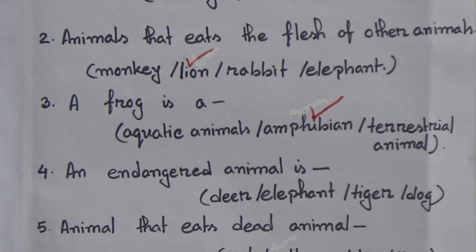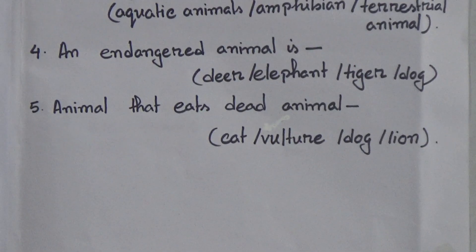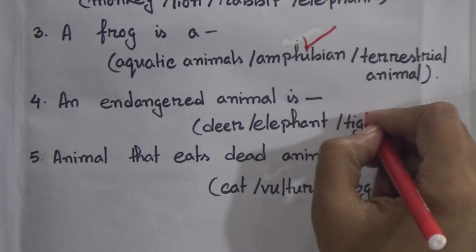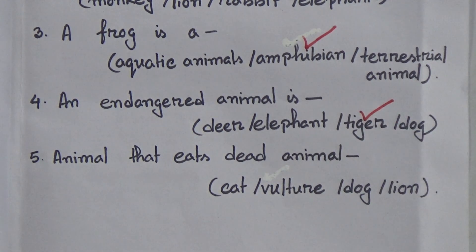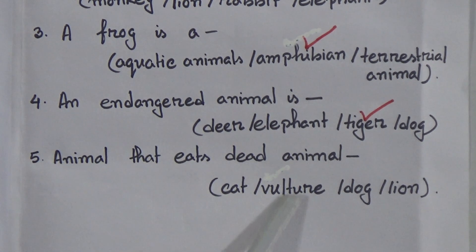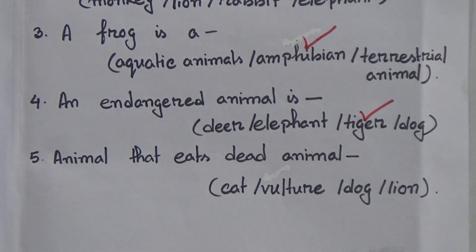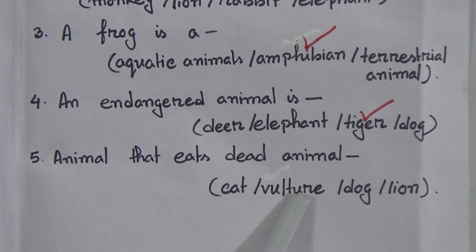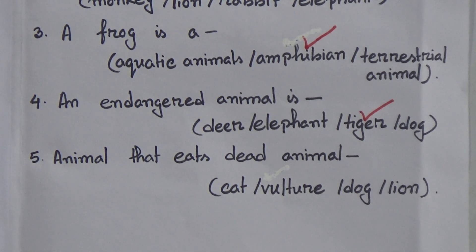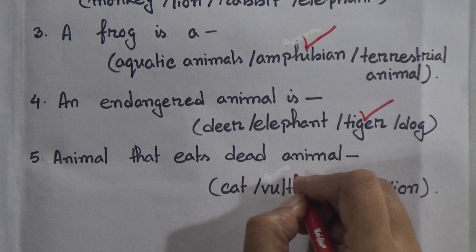Number four: an endangered animal — deer, elephant, tiger, or dog? Dear students, tiger is an endangered animal, so put a tick mark on tiger. Last one: an animal that eats dead animals — cat, vulture, dog, or lion? Vulture eats dead animals, so you have to put a tick mark on vulture.